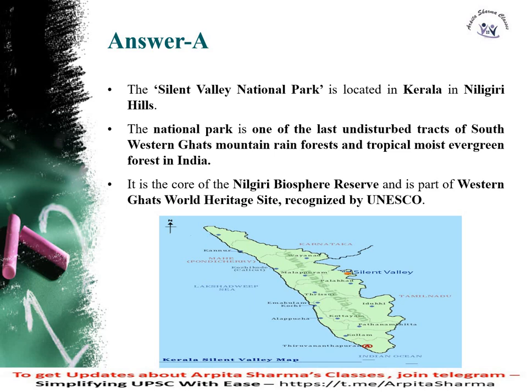Silent Valley National Park is located in Kerala in the Nilgiri Hills. The National Park is one of the last undisrupted tracts of Southern Western Ghats Mountain Rainforest and Tropical Moist Evergreen Rainforest. It is a core part of the Nilgiri Biosphere Reserve and is a part of the Western Ghats World Heritage Site recognized by UNESCO.